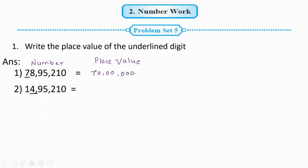Next number: 14,95,210. The underlined digit is 4. 4 is in the lakhs place, so the place value of 4 is 4 lakh.